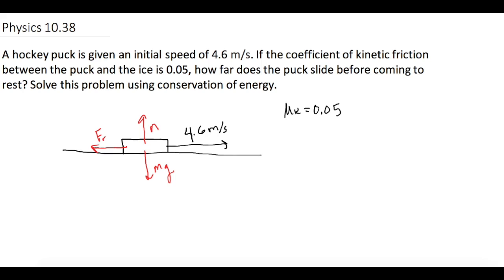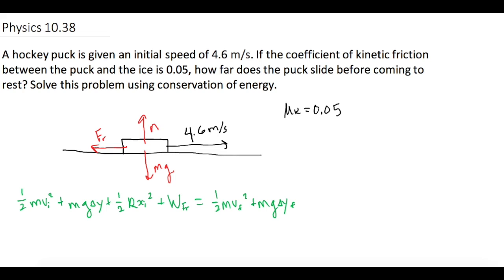Let's write our conservation of energy equation and cancel terms as we go. We have: ½mv_initial² + mgΔy_initial + ½kΔx_initial² + work due to friction = ½mv_final² + mgΔy_final + ½kΔx_final².